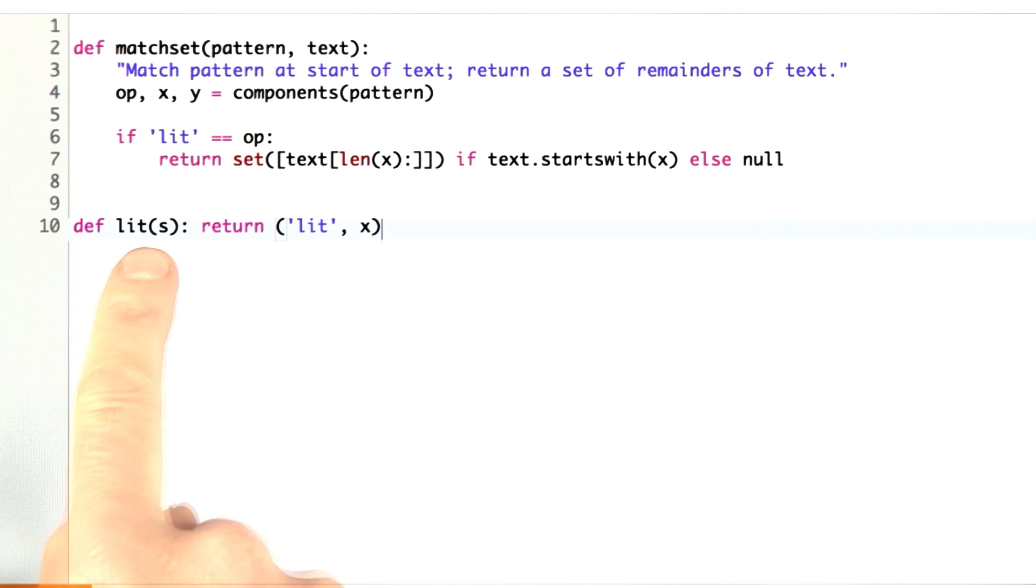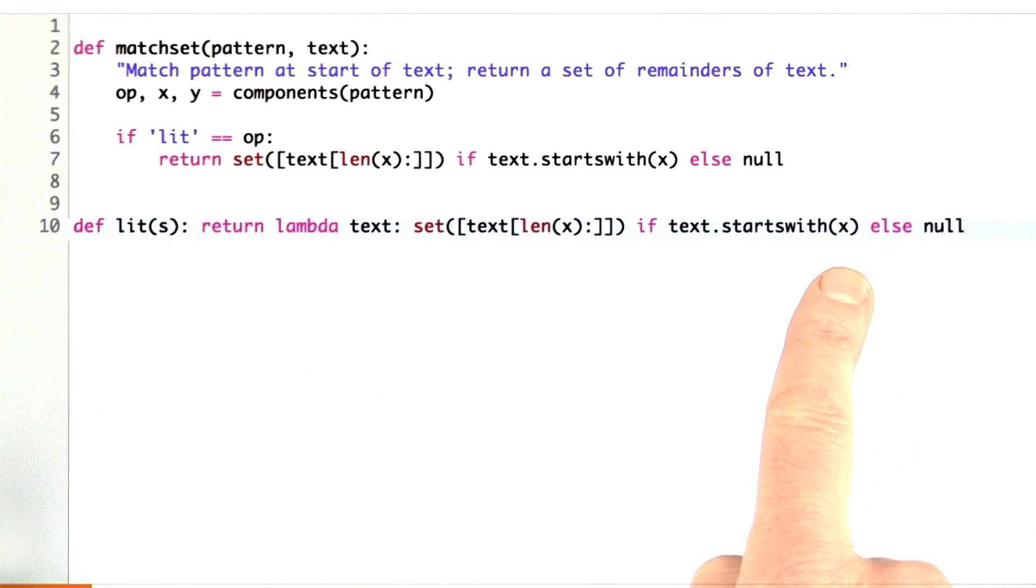Now, we're going to have literal act as a compiler, so what it's going to do is return a function that's going to do the work. What is this saying? We have the exact same expression here as we had before, but what we're saying is that as soon as we construct a literal rather than having that return a tuple, what it's returning is a function, which is a function from the text to the result that match set would have given us.